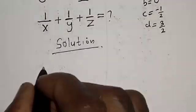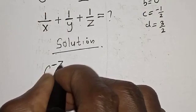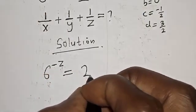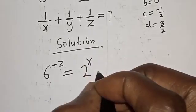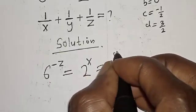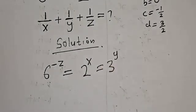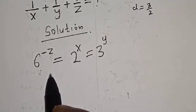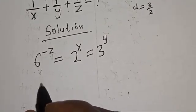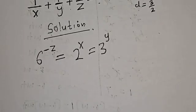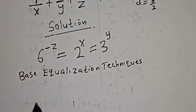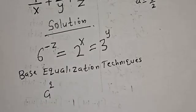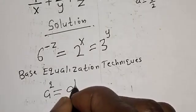We have the given equation: 6 raised to power minus z is equal to 2 raised to power s is equal to 3 raised to power y. Now we want to solve this using what we call the equalization technique. Note that if you have a raised to power q is equal to a raised to power p, this implies that q is equal to p.